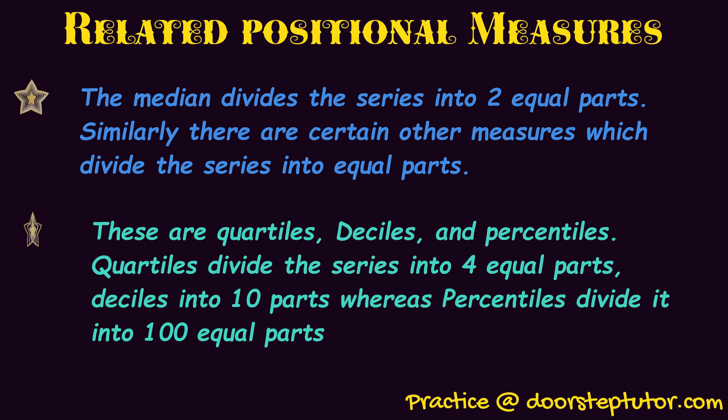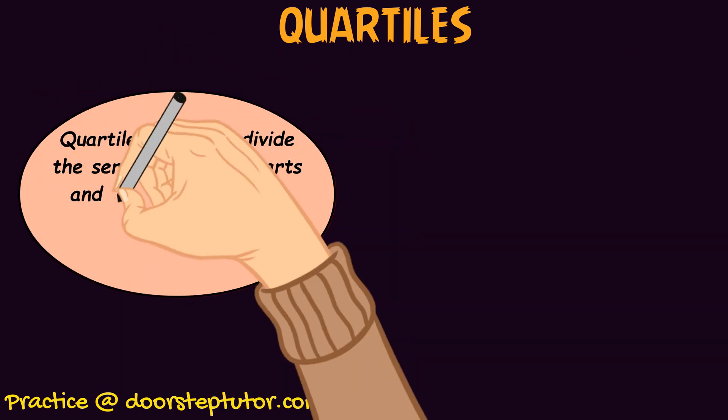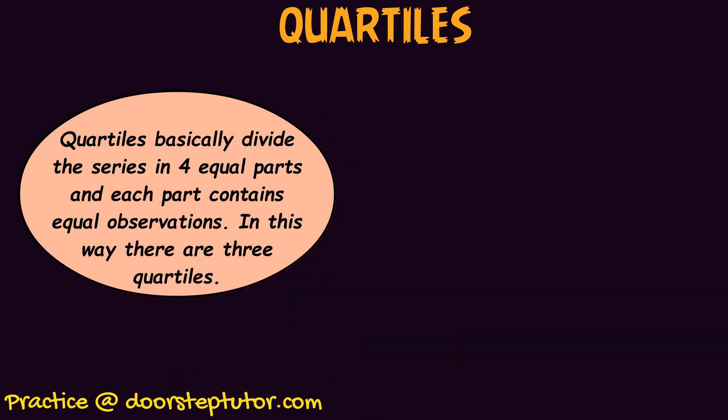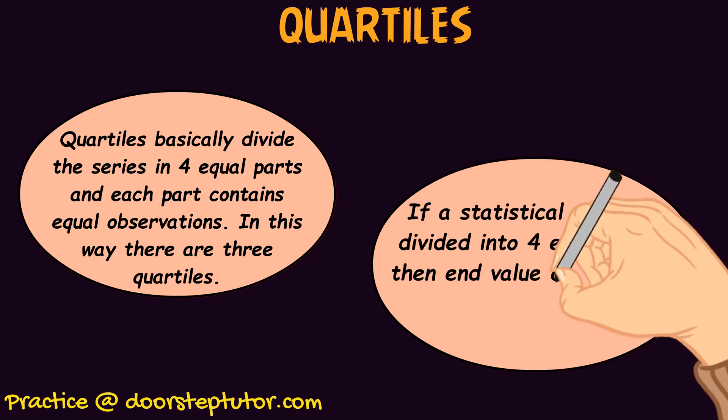Quartiles divide the series into four equal parts where each part contains equal observations. We are dividing the observations — for example, marks of certain students in a class. Median divides into two equal parts, showing the middle value, while quartiles divide into four parts. There are three quartiles because at the end of every part a quartile is formed. So if a statistical series is divided into four equal parts, the end value of each part is called a quartile.